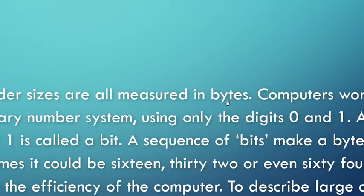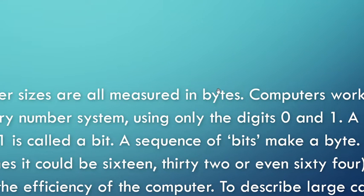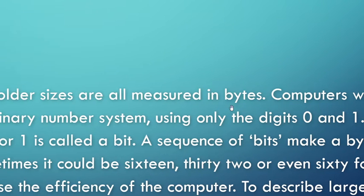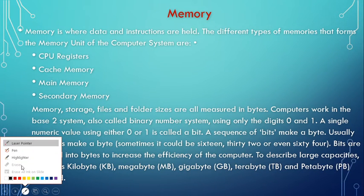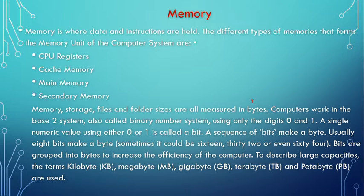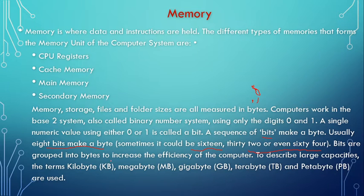In bytes: a byte means a collection of zeros and ones. A collection of eight zeros or eight ones is called a byte, equal to eight bits. A sequence of bits makes a byte — usually eight bits make up a byte. Sometimes 16, 32, or even 64 bits are grouped into bytes to increase the efficiency of a computer. A bit is the smallest unit of data; generally there are eight bits in a byte.